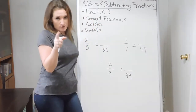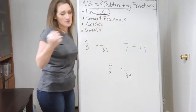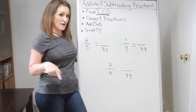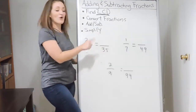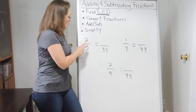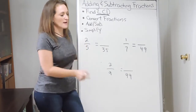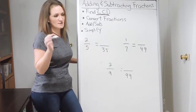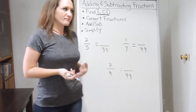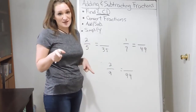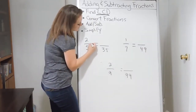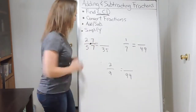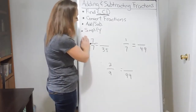We need to take 2/5 and switch it over to something over 35. The process is to look at your denominators first. We have a denominator of 5, and we need to convert it to have a denominator of 35. So think: 5 times what gives me 35? We know from our times tables that 5 times 7 is 35. So we multiply both the numerator and the denominator by 7 — we can't just multiply the denominator, we need to multiply both.